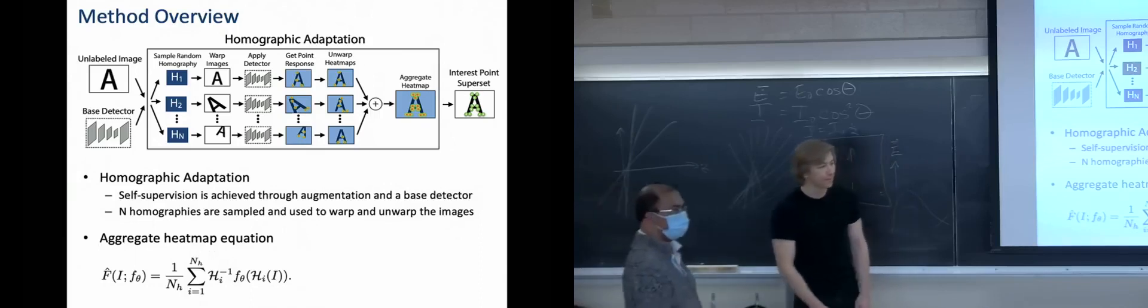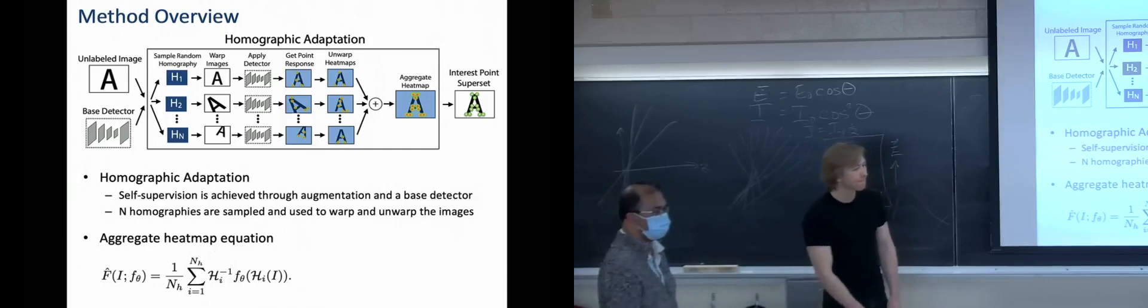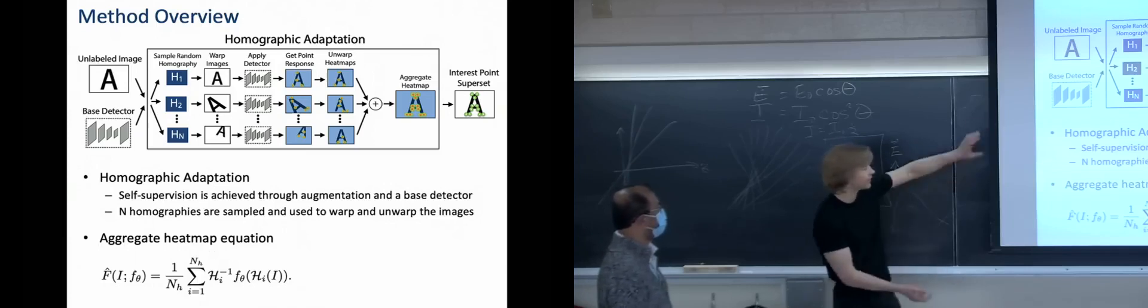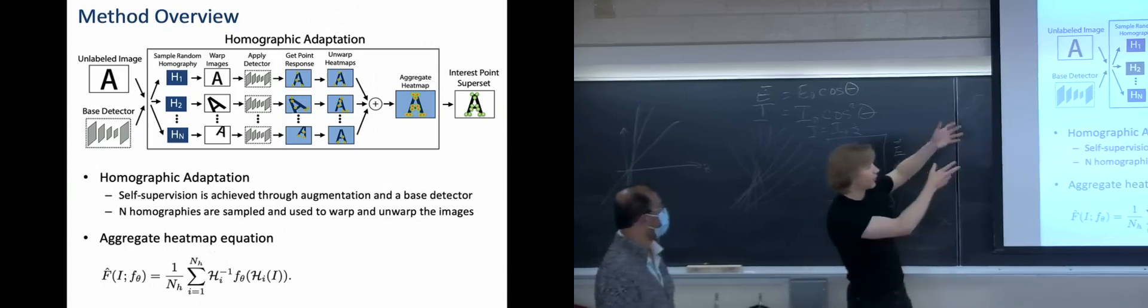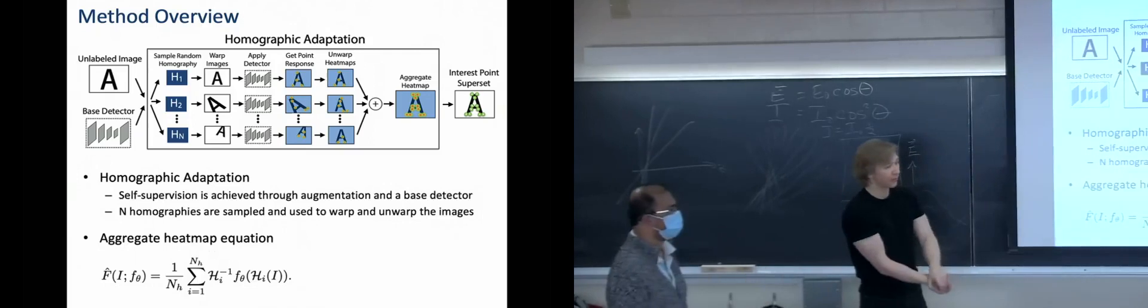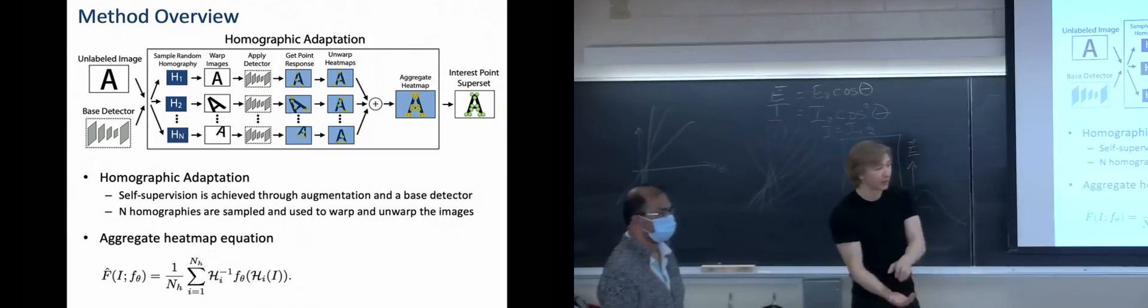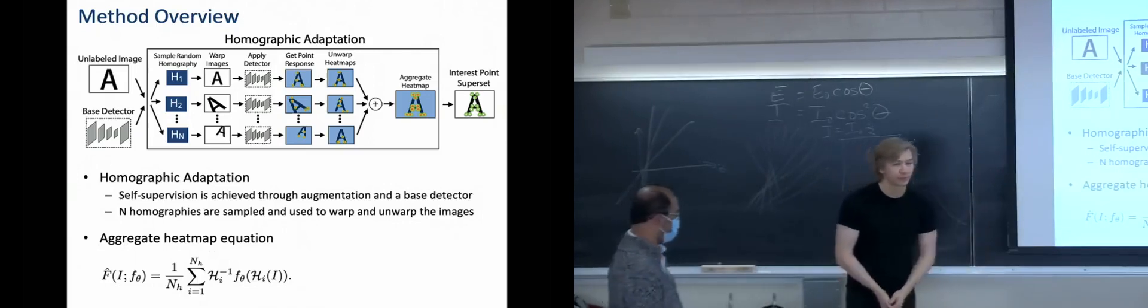I have a question. Is this adaptation done before the training of the encoder-decoder network or is it done outside of it? So first, the base detector is trained, then homographic adaptation is used to obtain pseudo-ground truth labels that are used to train the SuperPoint model. Thank you.